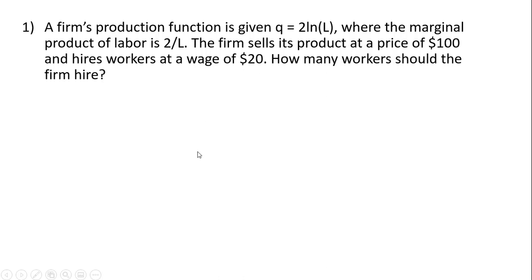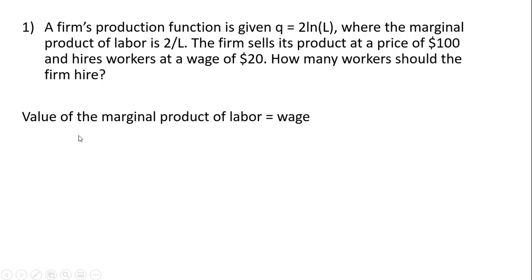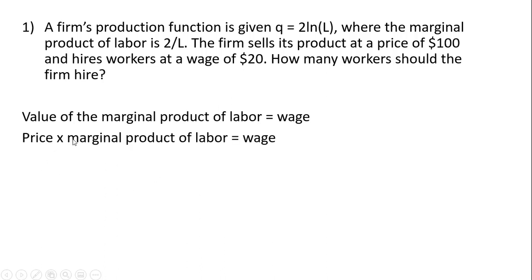How many workers should the firm hire? To maximize profit, the firm will hire up until the point where the value of the marginal product of labor equals the wage. The value of the marginal product of labor is the increase in revenue from hiring one more worker, and we set that equal to the added cost of hiring one more worker, which is the wage. The value of the marginal product of labor is simply the price — in this case $100 — times the marginal product of labor, which is 2 divided by L, and we set that equal to $20, the wage.